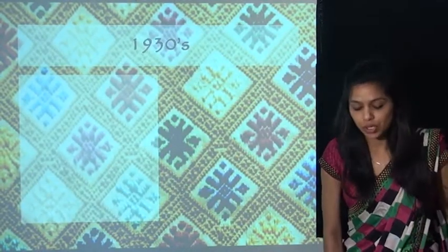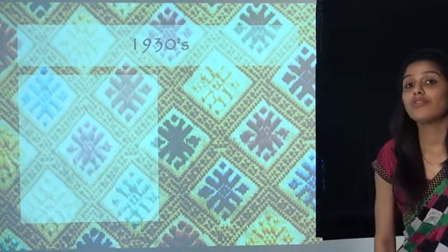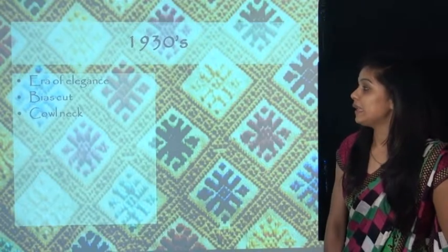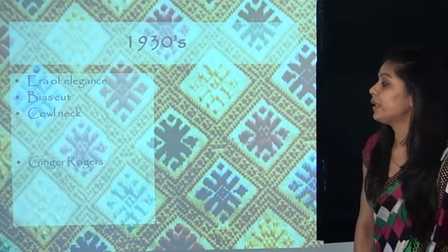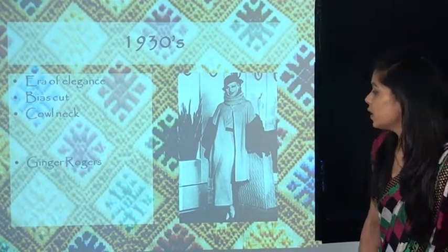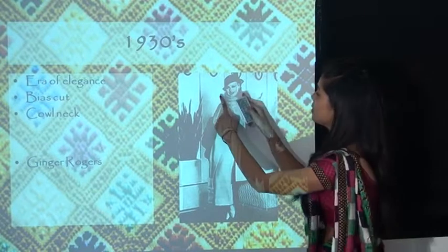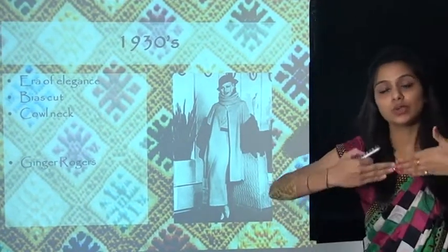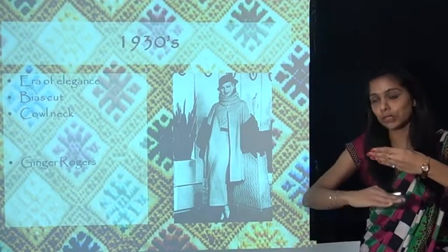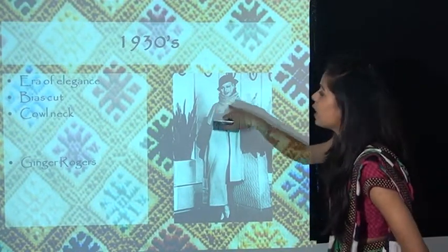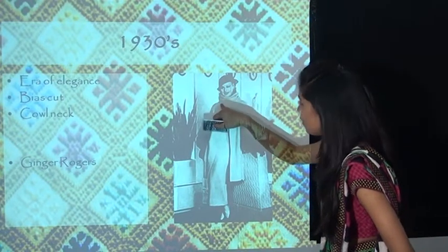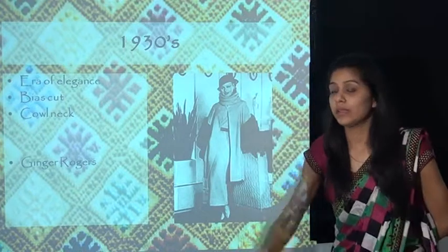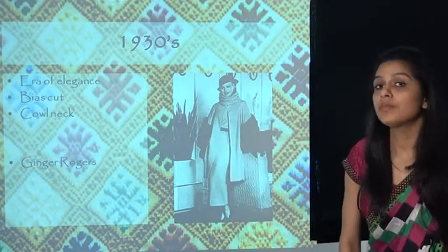Next is 1930s fashion. The style followed in the 1930s was the era of elegance, featuring the bias cut, cowl neck, and draped garments. We can see in this image this kind of neckline is the cowl neck — it has layers of fabric that are very smoothly draped.